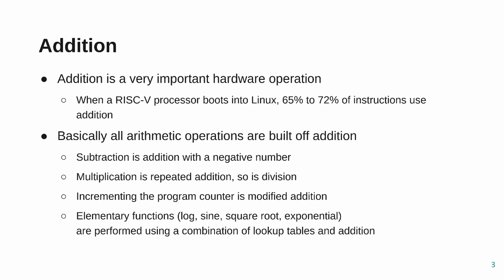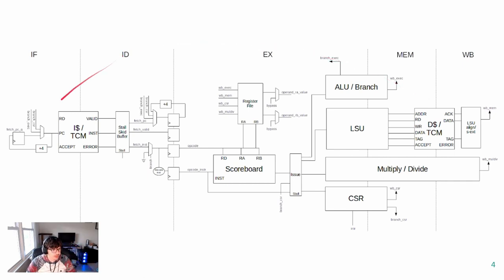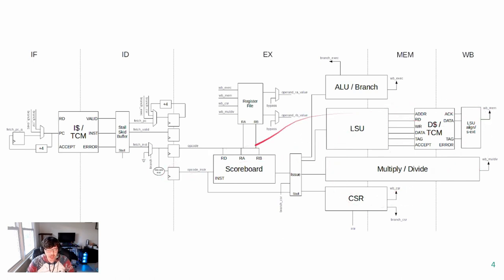Subtraction is just addition of a negative number, multiplication is repeated addition, and even incrementing a program counter inside a processor is a modified addition. If you search a RISC-V GitHub diagram, you can see addition is everywhere — the plus four on the program counter, the ALU which is a big adder with some logic on the side, multiply/divide which is a bunch of adders. Addition is ubiquitous, it's in almost every stage of a processor, and it's usually on the critical path, which means it needs to be made optimal.